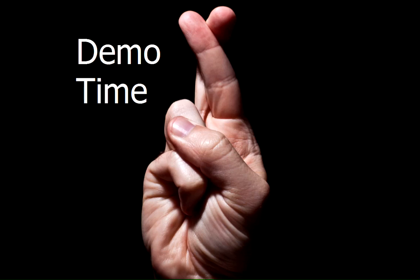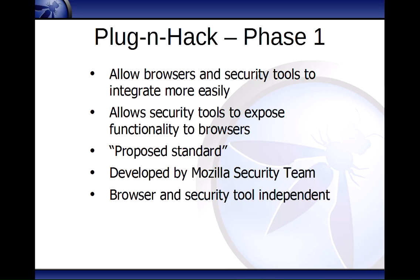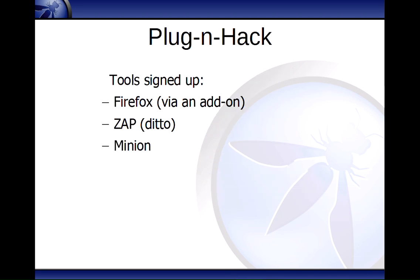That's Plug and Hack phase one. What it does is allow browsers and security tools to integrate more easily, and allows security tools to expose functionality to browsers. ZAP was telling Firefox exactly what it could do and the endpoints — that's all just metadata from ZAP. But we want this to be adopted by as many other tools and browsers as possible. There's a proposed standard we've developed, and we want other tools and browsers to support it because we think that would be good for the industry. Firefox and ZAP are signed up, as are Minion, Burp Suite, and others. People are starting to implement this stuff, which is really great.